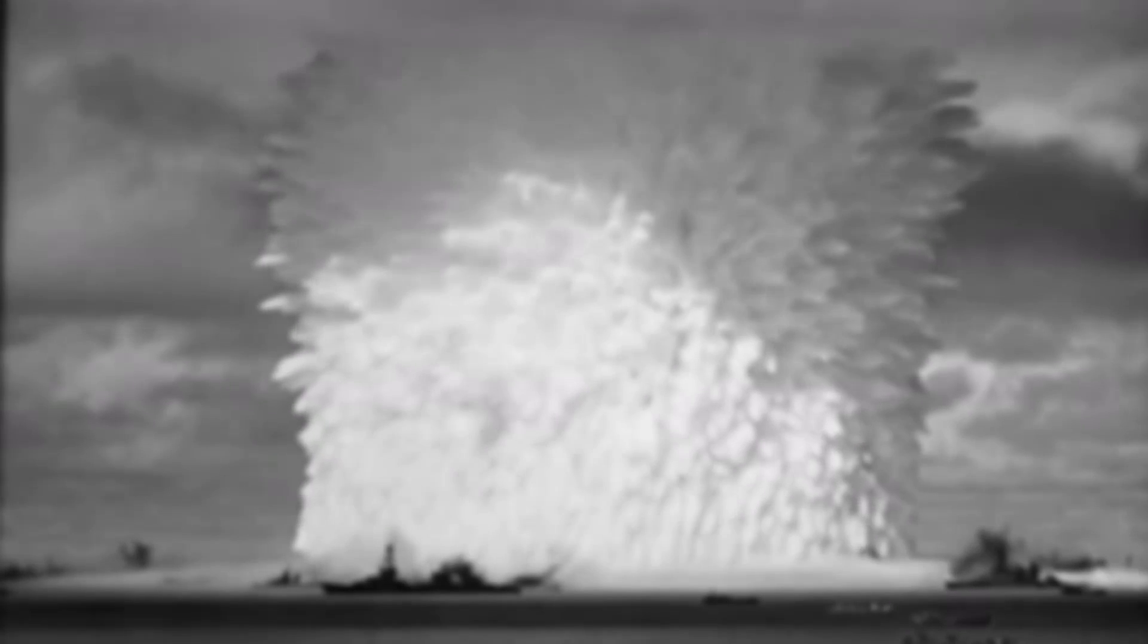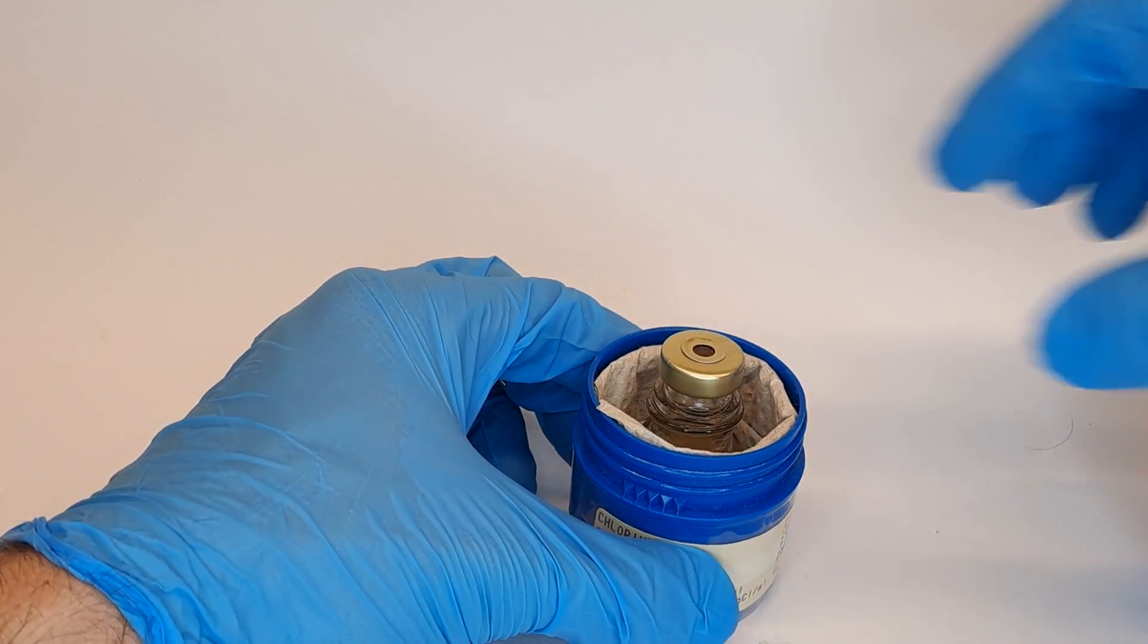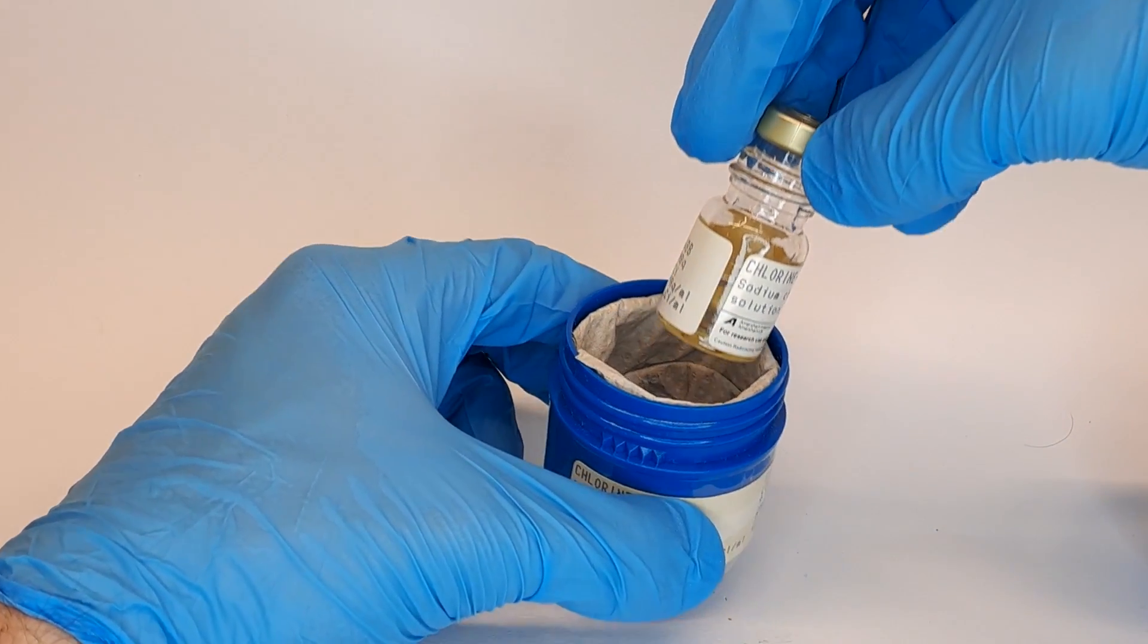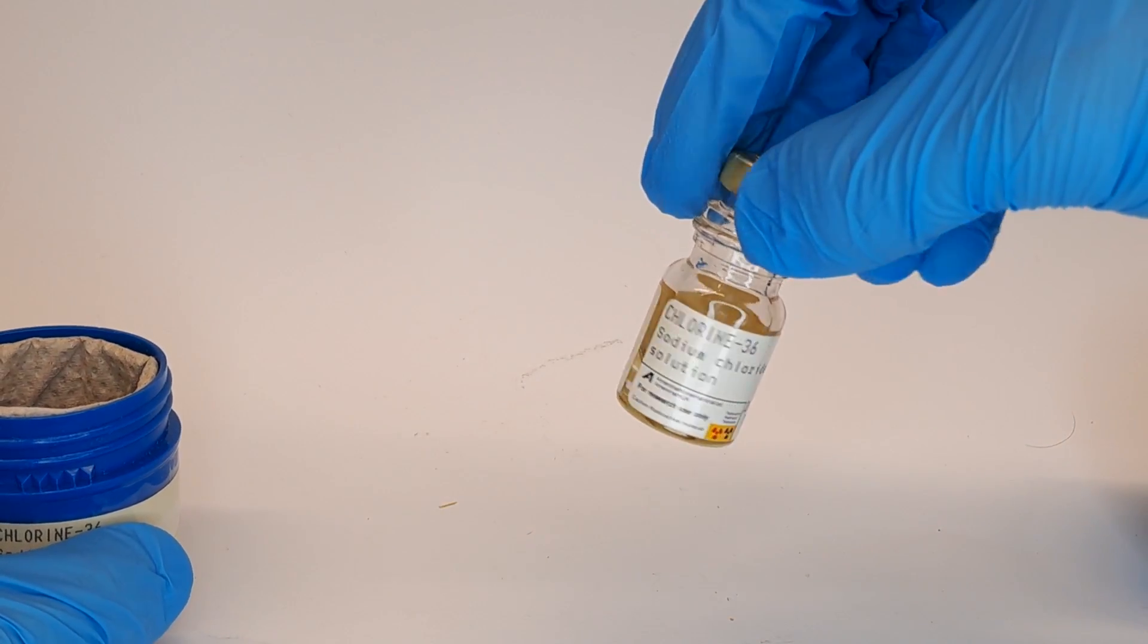Due to this anthropogenic Chlorine-36 spike in groundwater, this groundwater can also be dated, and for such dating work, a standard like this one that we have in the lab is needed.